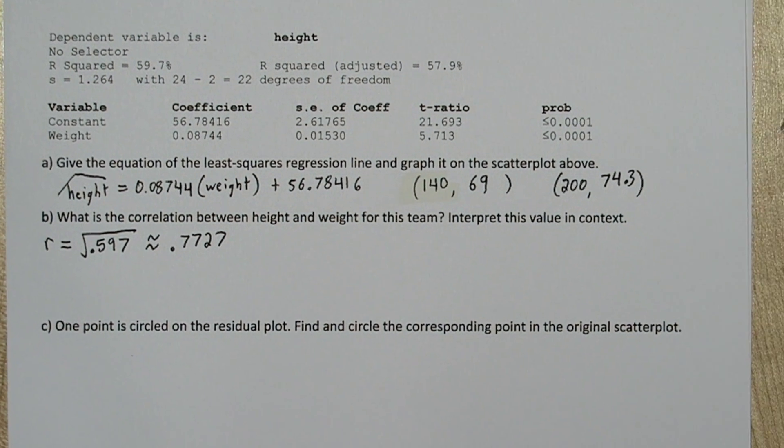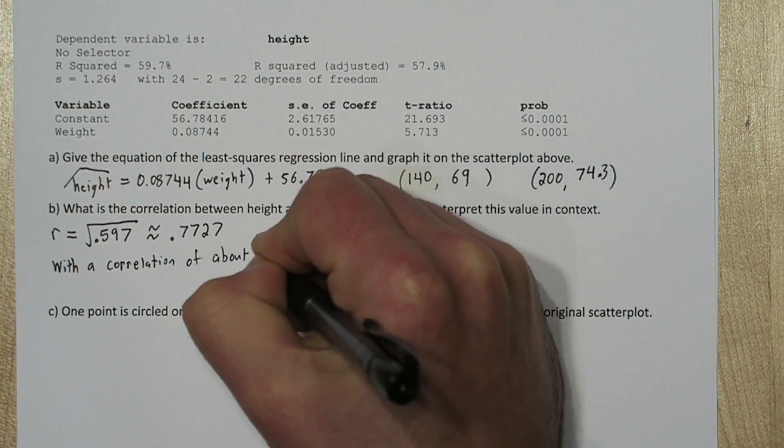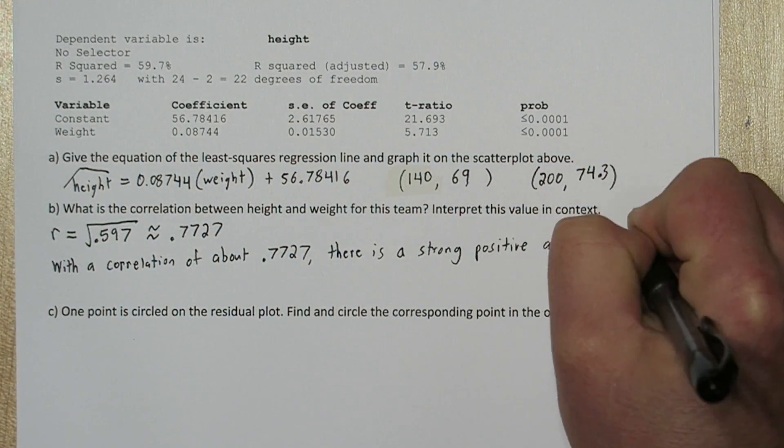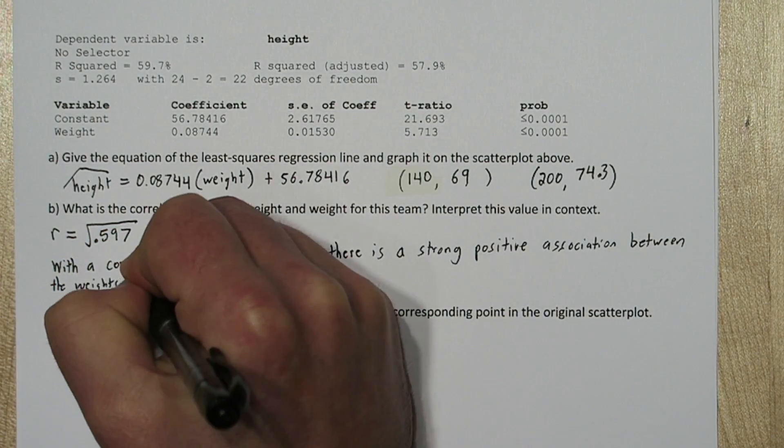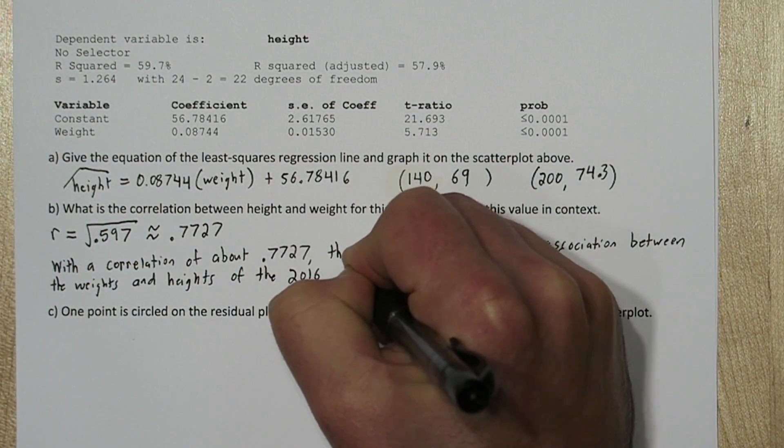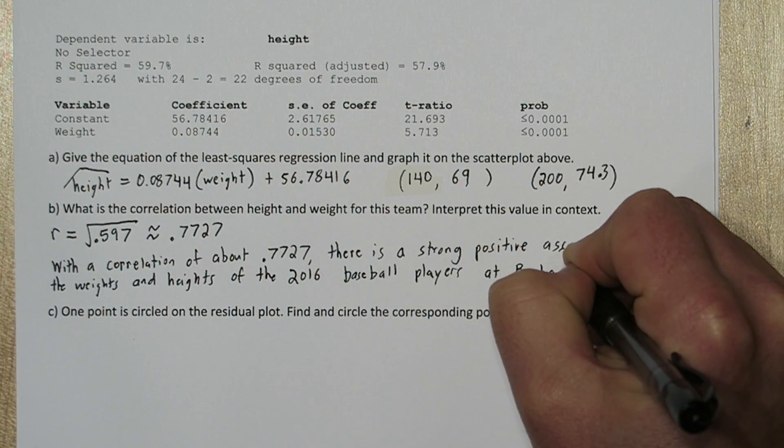So to interpret this value, we'll say with a correlation of about 0.7727, there's a strong positive association between the weights and heights of the 2016 baseball players at Buchanan High School.